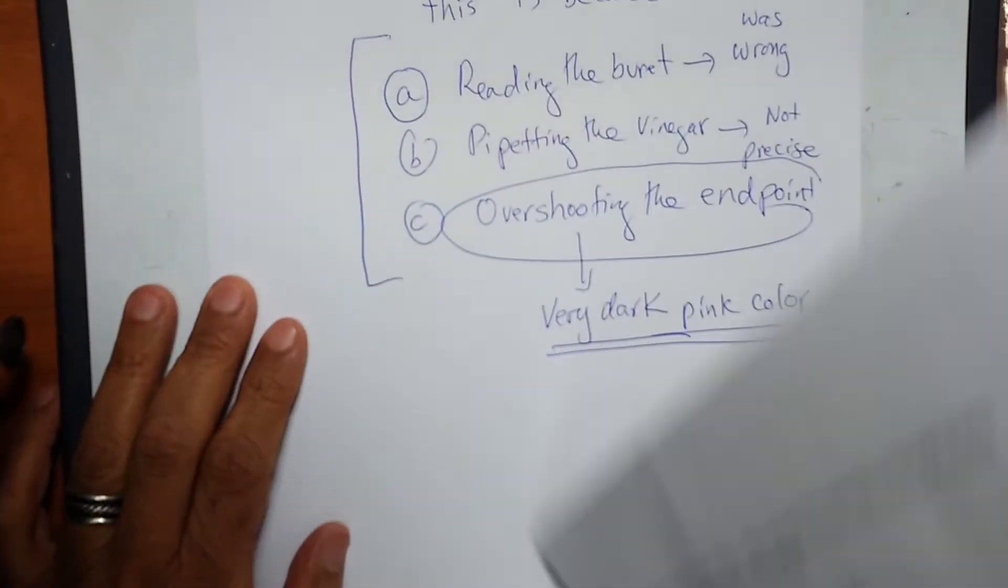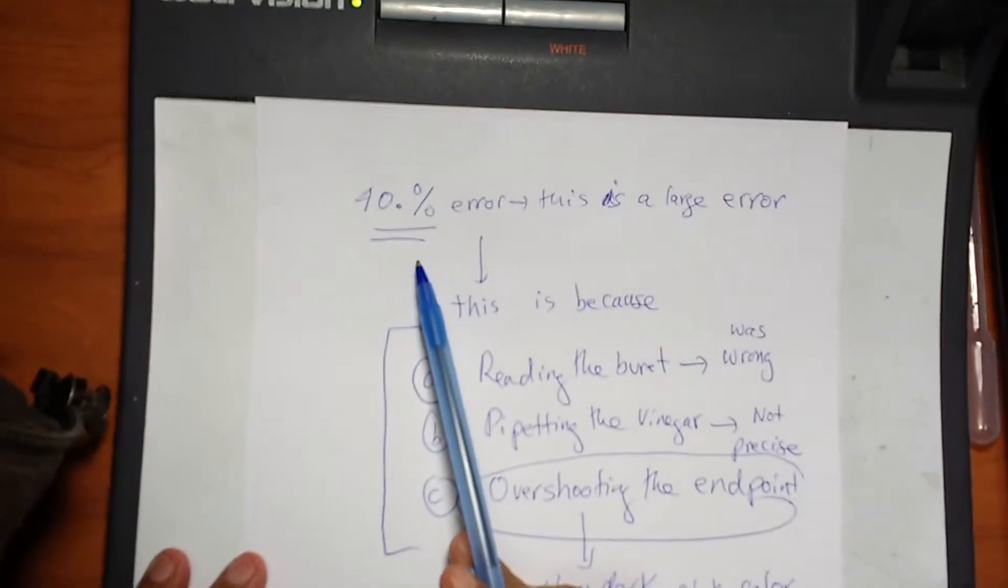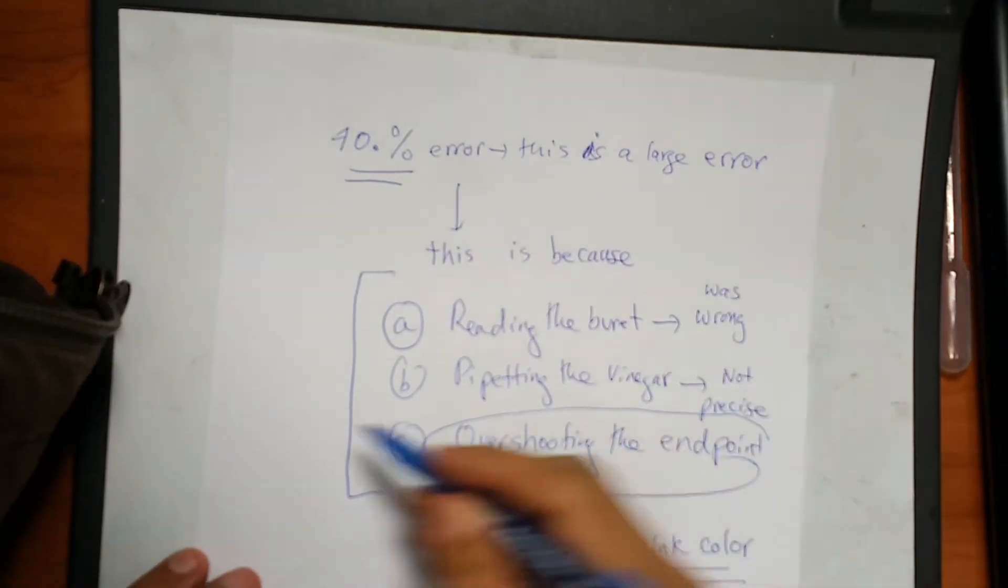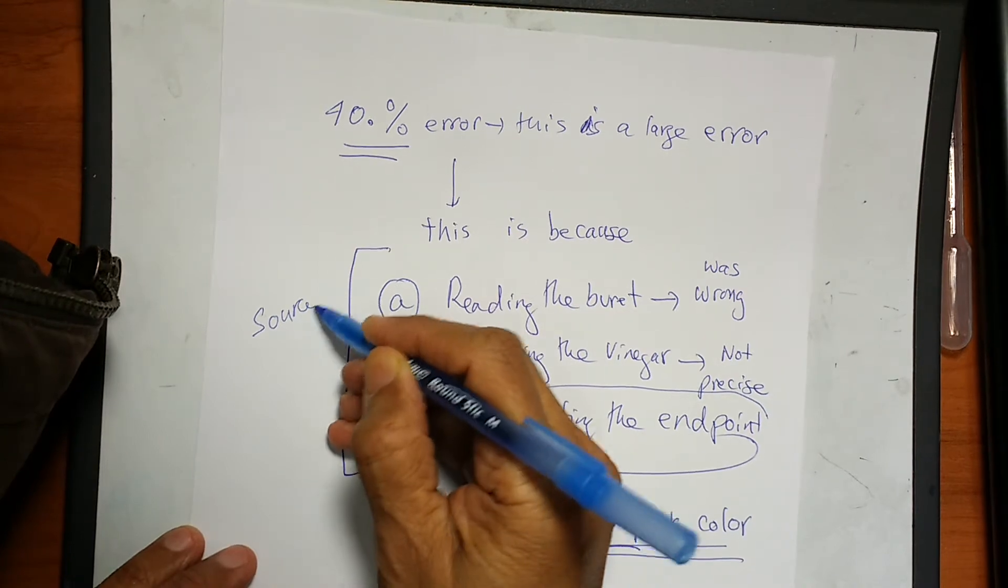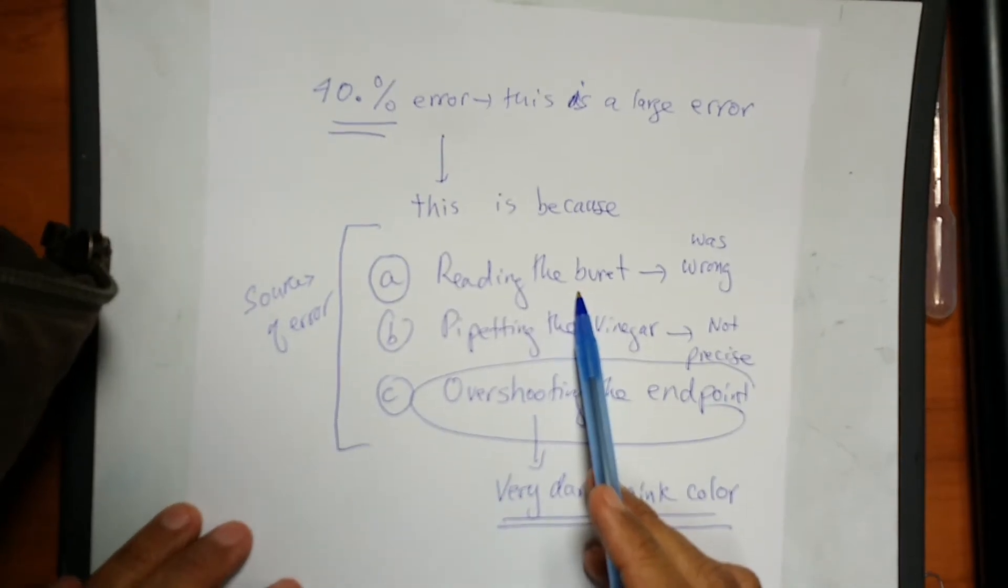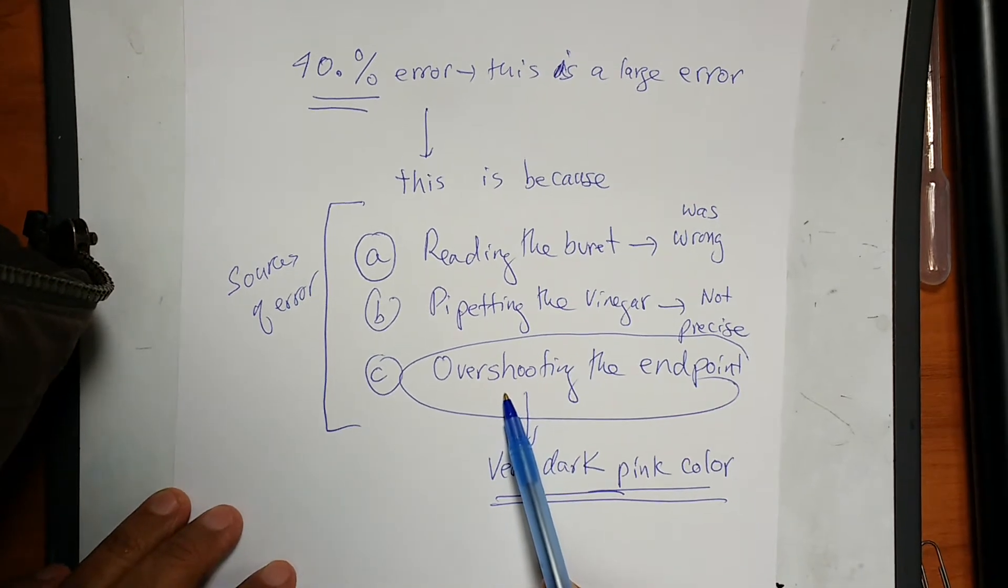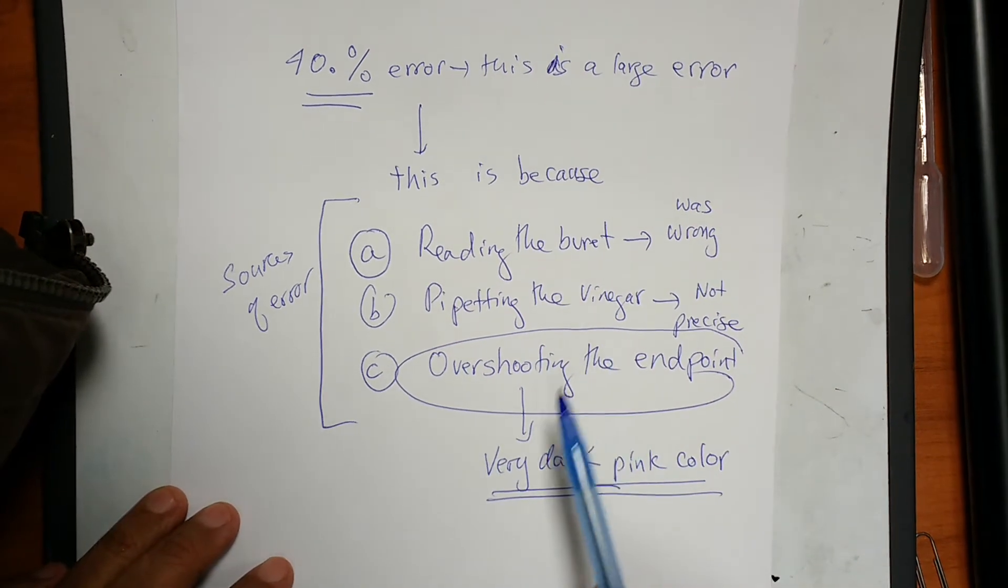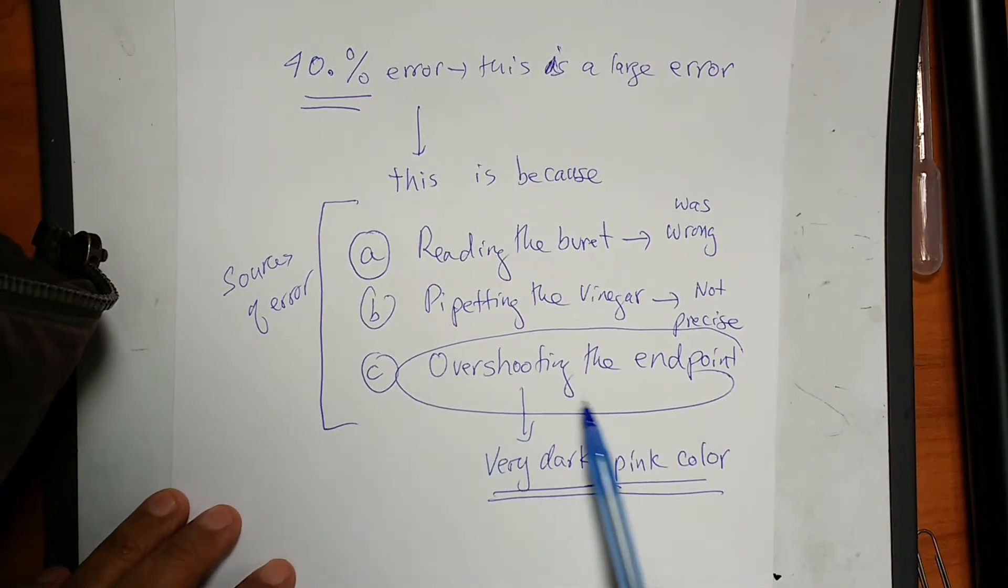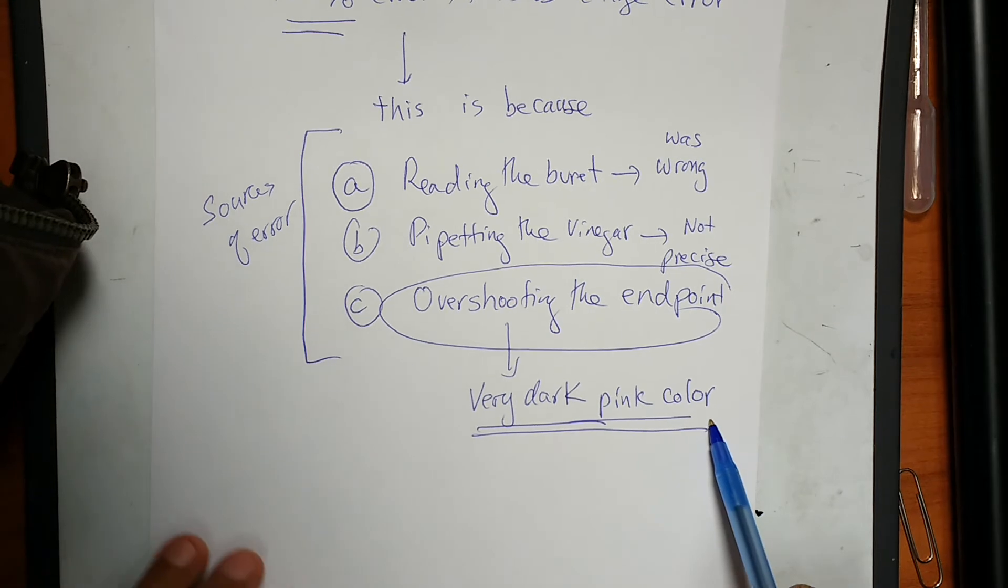So let's ask ourselves, why is this so high? This is very high percentage of error. 40% is very large. So this is because we have to get the sources of error, and those are our sources of errors. So our source of errors: reading the burette was not correct, pipetting was not that precise. And then there's a lot of possibilities, most of that group of the students with their 40% error overshot the end point. So how do we know this? By looking at the very dark pink color of the solution.